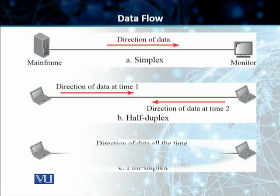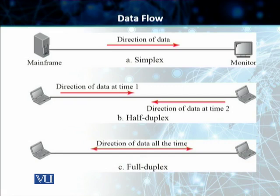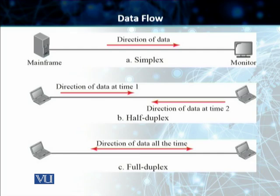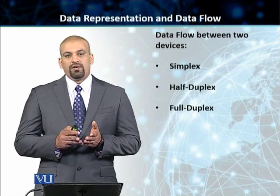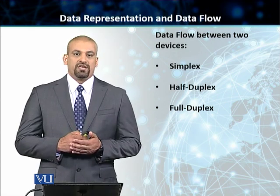The third mode is full duplex, which is what we almost universally use in our communication systems today. Both systems can transmit and receive simultaneously at the same time. Think of it as a two-way street where traffic flows in both directions. Both machines share the transmission medium by either having separate transmission paths or by dividing the overall capacity of the link between them. This mode is used when communication is required to happen in both directions simultaneously. That covers data flow modes and data representation in a data communication system.